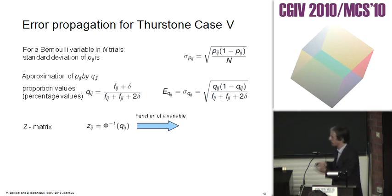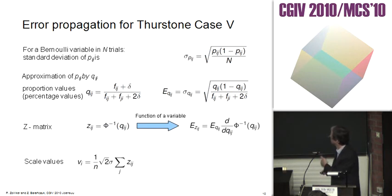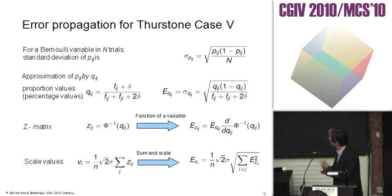If you go to the set matrix, we have a function of a variable. We do error propagation. Then in the next step to get the scale values, we have a sum of variables and scales, and we end up with our first error estimation formula.